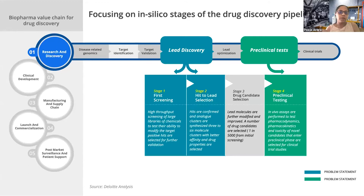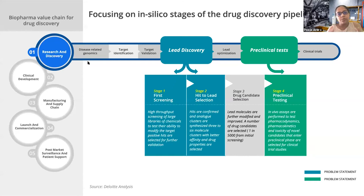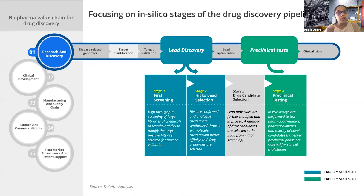The drug discovery process, looking at the entire value chain, includes research and discovery, clinical development, manufacturing, launch, commercialization, and post-market surveillance. Focusing on the discovery piece: first is target identification and validation — be it COVID or diseases like Alzheimer's, which is caused by misfolding of a protein. The first step is to identify the right target, validate it, and understand where we can create the right keys. Target validation mostly involves a gene, protein, or different metabolic pathways within the body.